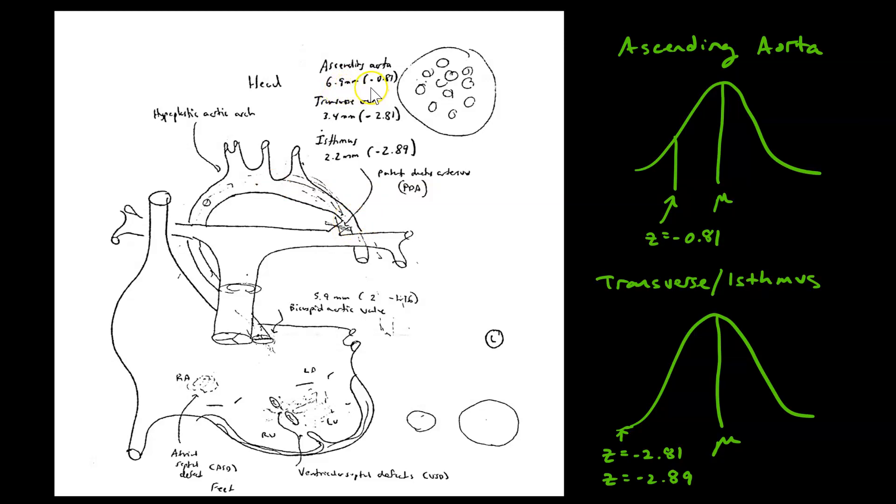The z-score for Eliza's ascending aorta was negative 0.81. In a bell curve distribution of the widths of ascending aortas in newborn babies, she was 0.81 standard deviations below the mean.